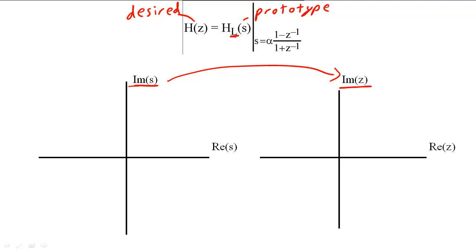We compute this mapping with the bilinear transform. When we apply the bilinear transform, we find that points on the imaginary axis on the S-plane map to points on the unit circle on the Z-plane.